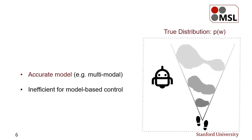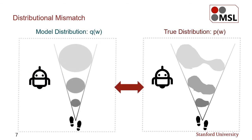On the other hand, one can attempt to obtain a more complex model that better captures the true stochastic process, for example by leveraging state-of-the-art machine learning methods. Yet, such high-fidelity distributions are often inappropriate for the sake of efficient control and planning, requiring computationally intensive sampling. Therefore, it is crucial for the robot to recognize and appropriately handle such a mismatch between the model and the true distribution in a stochastic system.